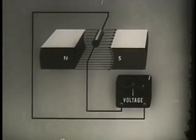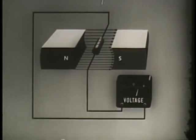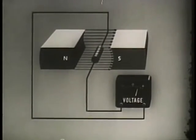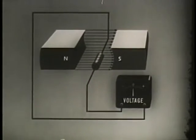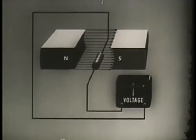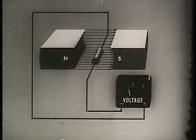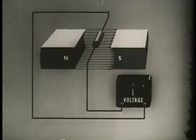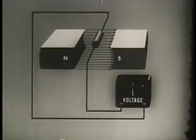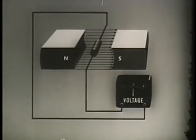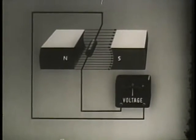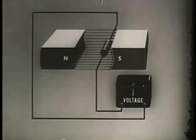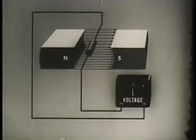Moving the conductor down through the field makes the needle of a voltmeter deflect one way, which means the EMF has one direction. Moving the conductor up through the field produces the opposite deflection of the needle — the EMF has now changed direction. Moving the conductor back and forth with the field does not make the needle deflect; there is no EMF because the conductor is not cutting the field.